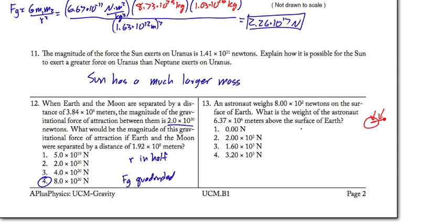If we double R, force of gravity is quartered, again that inverse square law relationship. So if the astronaut weighed 800 newtons on the surface, the astronaut is going to weigh one-fourth of that or 200 newtons when they're an extra one Earth radius away from the surface of the Earth. Thank you very much.